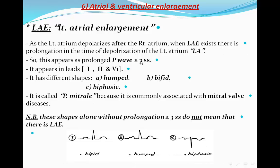The P wave has different shapes, but we must first confirm prolongation, then look at the shape. Sometimes it will be broad and humped, sometimes bifid with two peaks, and sometimes biphasic — especially in V1. The first peak is positive because V1 is on the right fourth intercostal space, capturing mainly right atrial activity. Because the left atrium is far from V1, it produces a negative deflection. These shapes alone, without prolongation more than three small squares, do not mean left atrial enlargement.